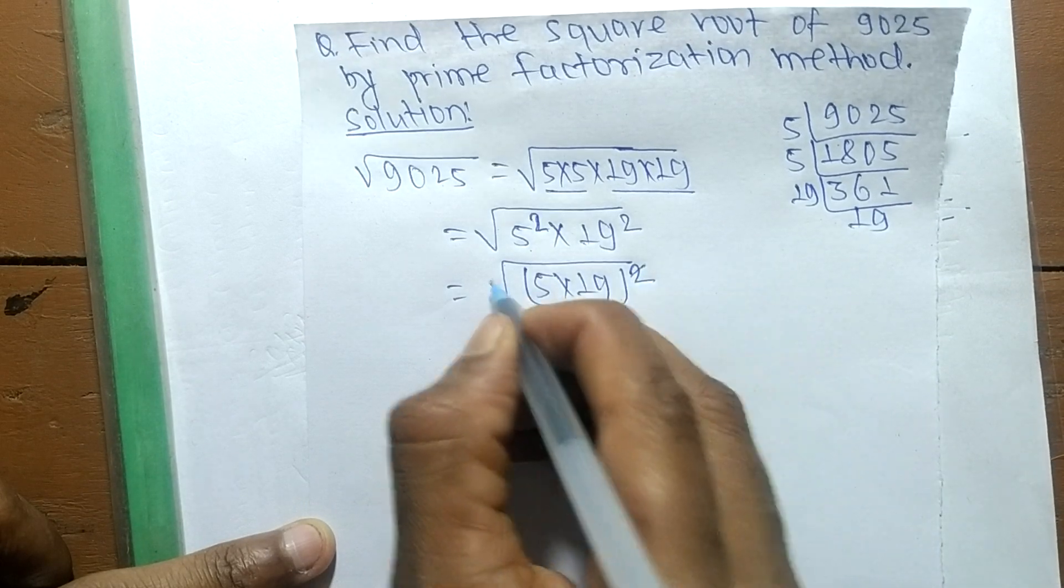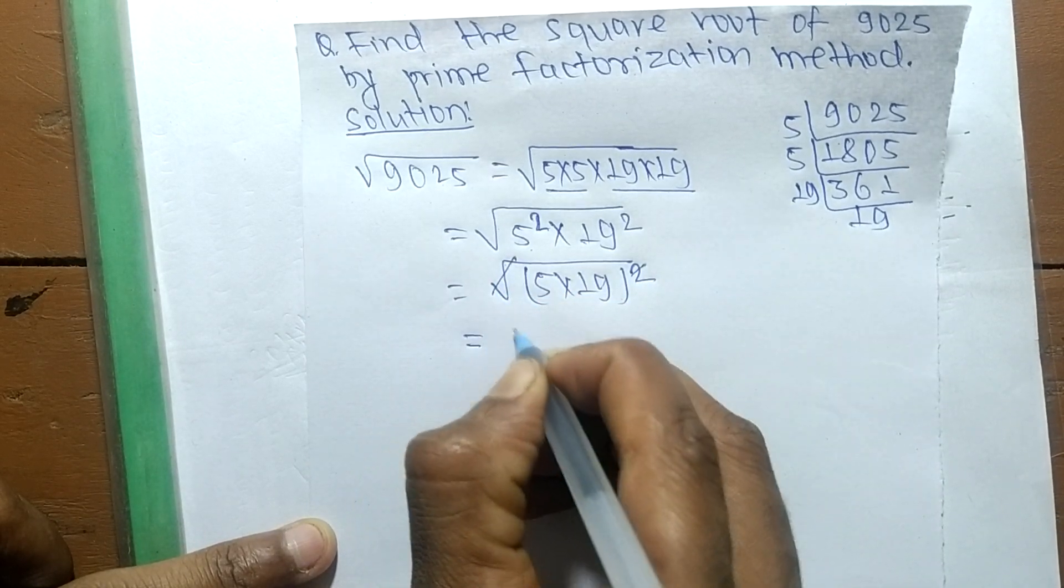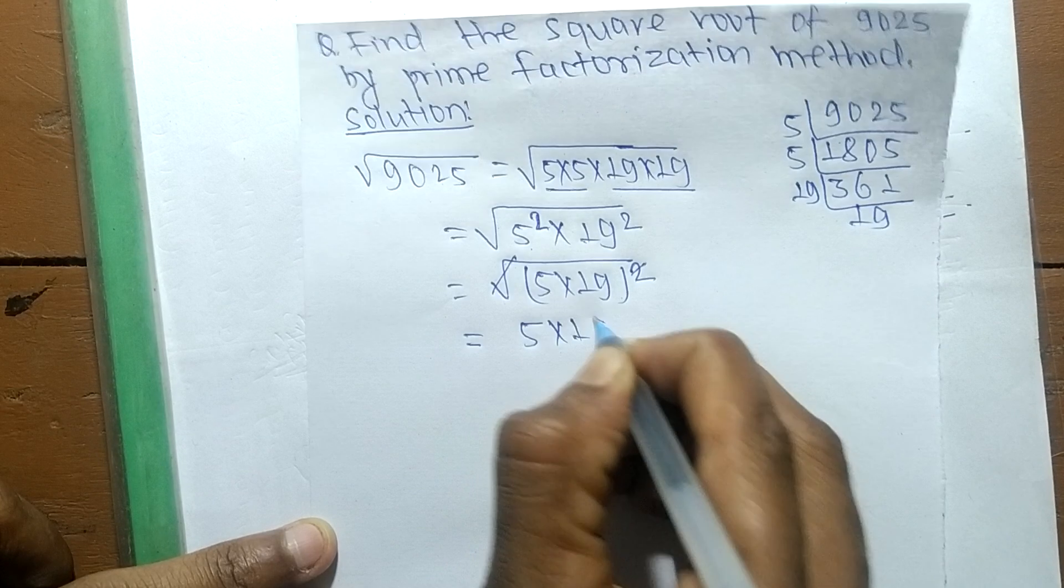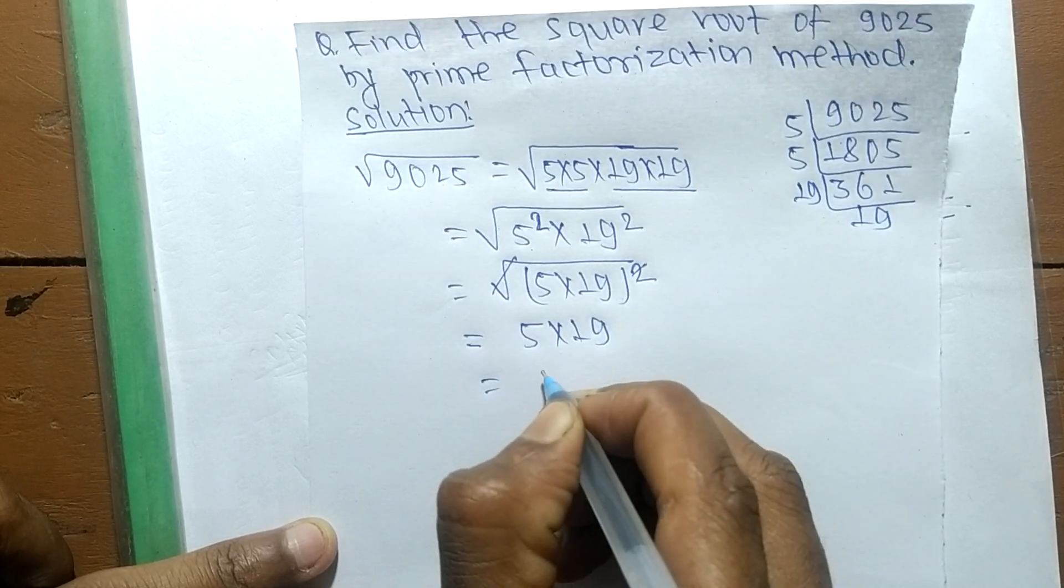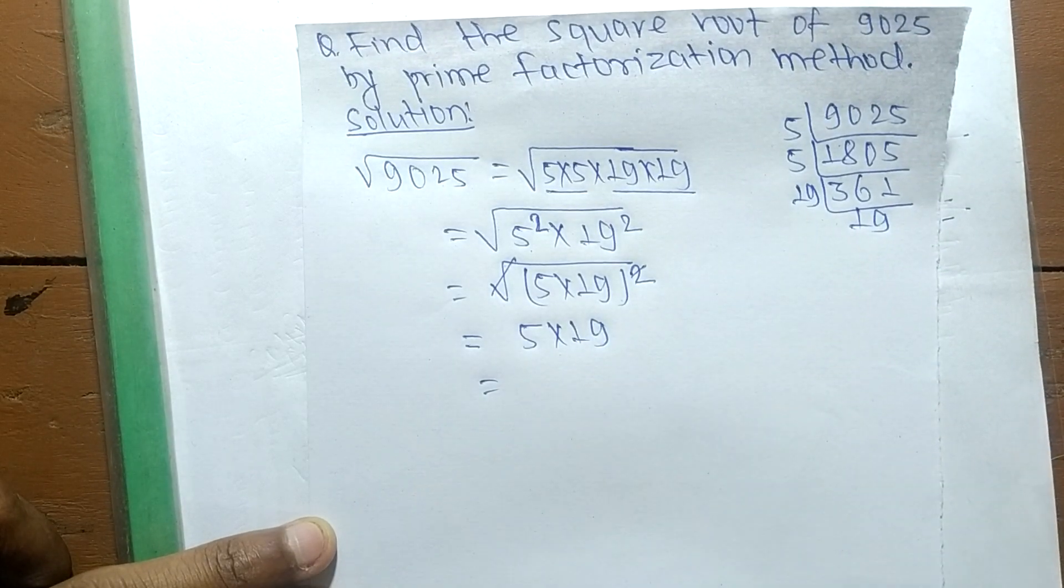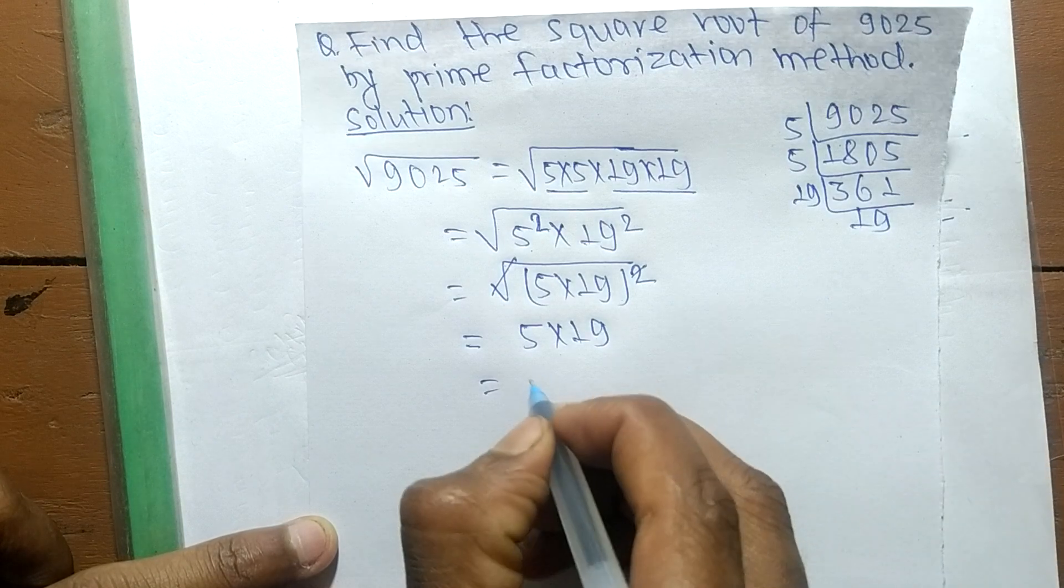The square and square root cancel, and the remaining is 5 × 19, so it is equal to 95.